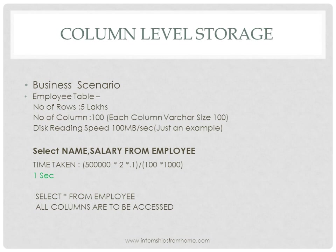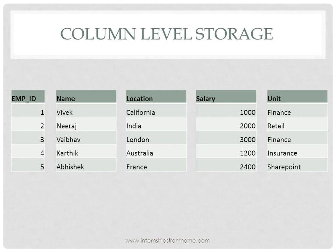Now the question arises: if column level storage is 50 times faster, why do we need row level storage at all? Consider the query SELECT * FROM employee, where we access all columns. In column level storage, all columns are in different files, so to retrieve the first row we must access employee ID 1 from one file, then the corresponding name from a second file, the location from a third file, and so on. Accessing multiple files creates additional overhead and results in deterioration of performance.